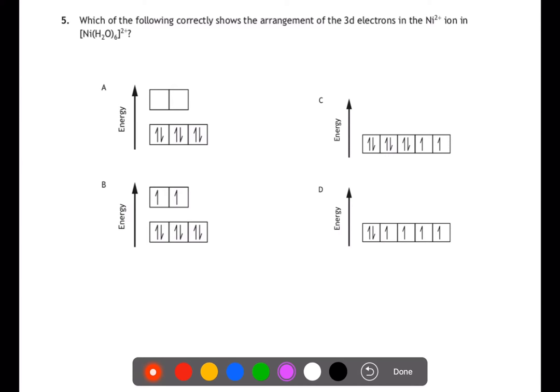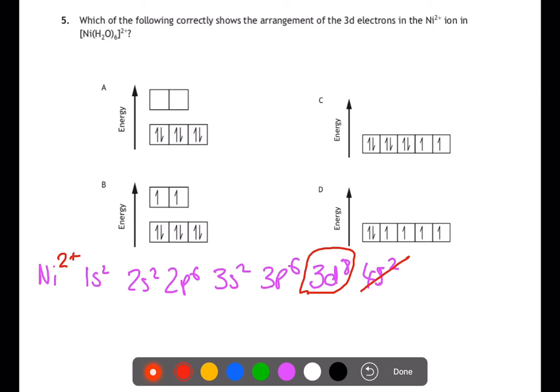Question five. We're looking at the arrangement for the three D electrons in the nickel two plus ion within this complex. If we write out the electron configuration for nickel: 1s2, 2s2, 2p6, 3s2, 3p6, 3d8, 4s2. When we turn this into a nickel two plus ion we remove the four S electrons and we're just going to concentrate now on the eight D electrons. Since this is a complex the D orbitals are no longer degenerate and will have split. So we can ignore C and D as the answers. We have eight electrons so when they fill they're going to fill in the arrangement of B.